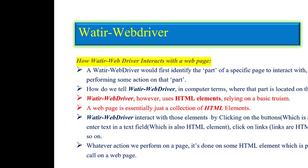Every HTML element has some type of name-value pair attributes. For example, 'id' is the attribute name and 'ABC' is the value. 'name' is another attribute with whatever value you specify. All these are name-value pairs on the element. For input elements, 'input' is the main HTML tag and these are the attributes — name-value pair attributes.